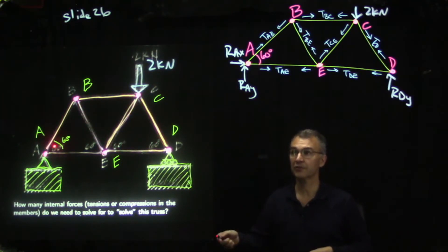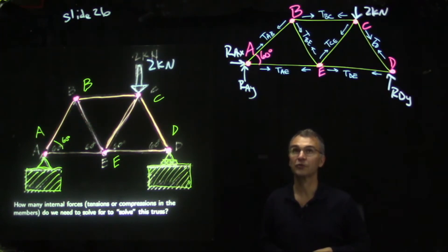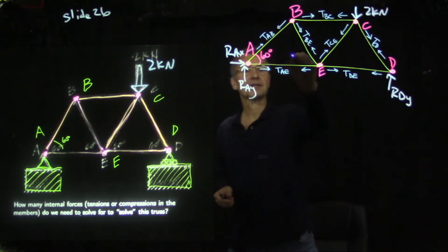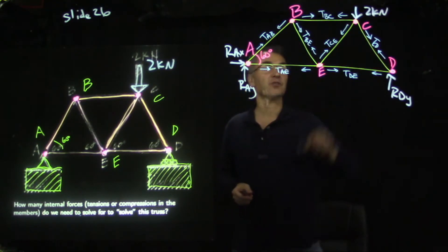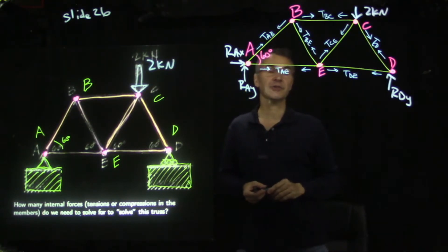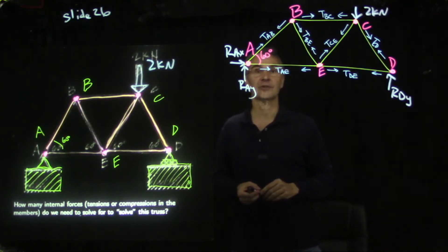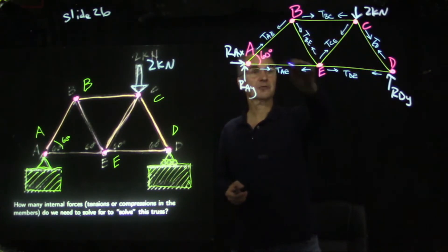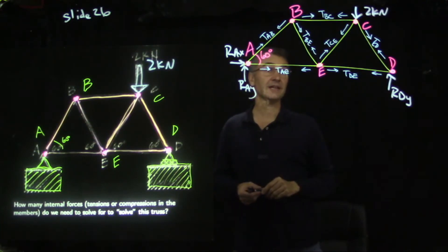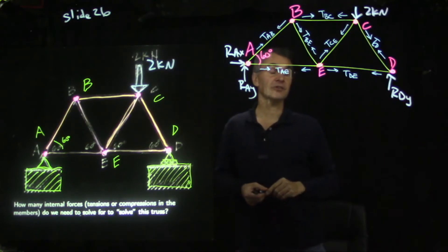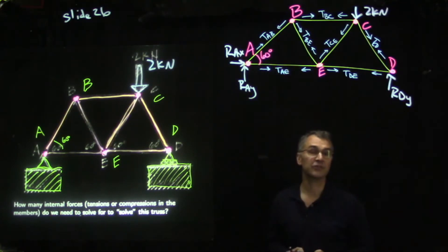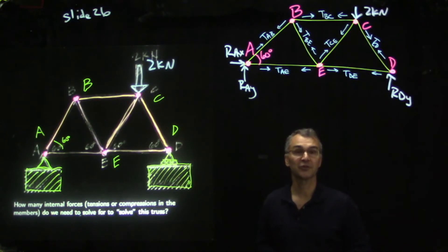The seven bar forces are T-AB, T-AE, T-BC, T-BE, T-CE, T-DE, and T-CD. All assumed in tension — we get negative numbers if they're actually compression. Seven unknown bar forces plus three unknown reactions equals ten unknowns. With five joints, we get ten equations. That's exactly the right number of equations to solve for the number of unknowns.